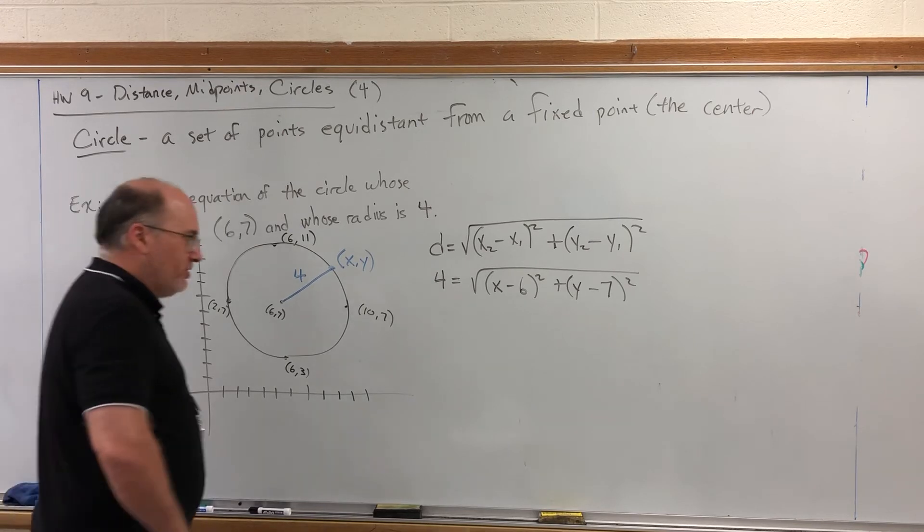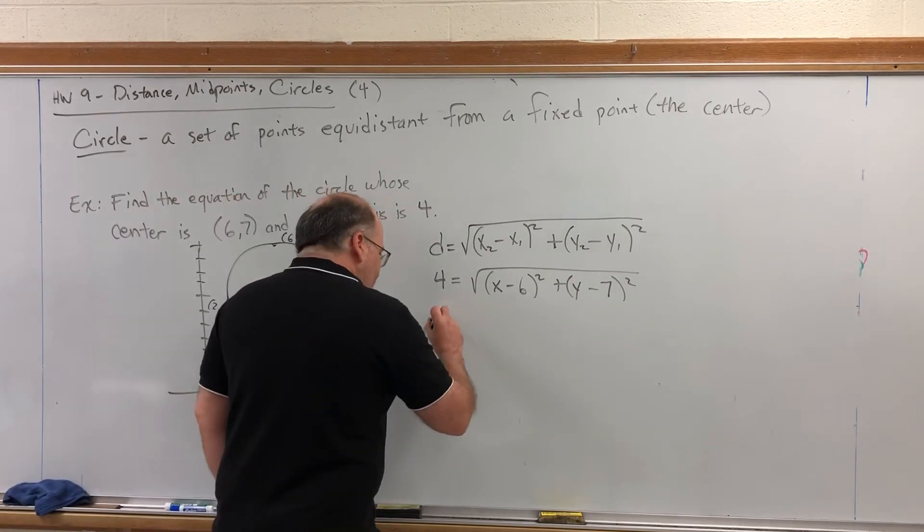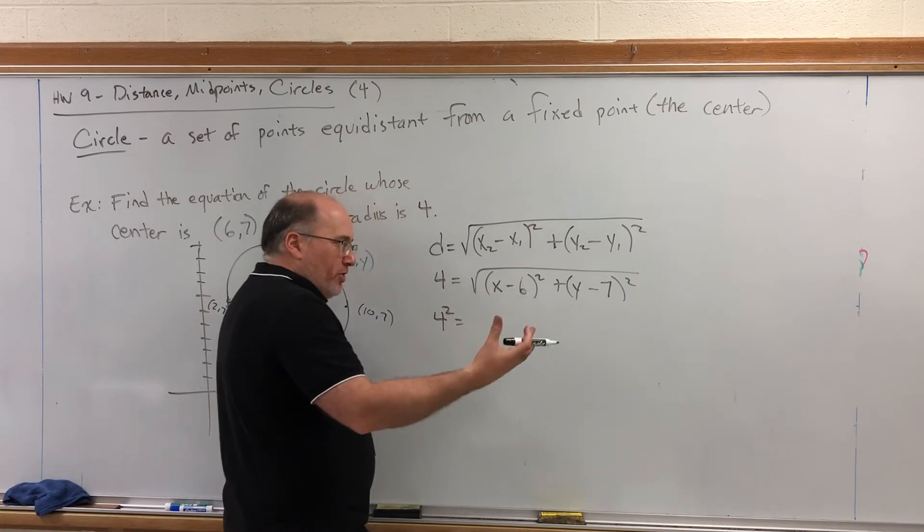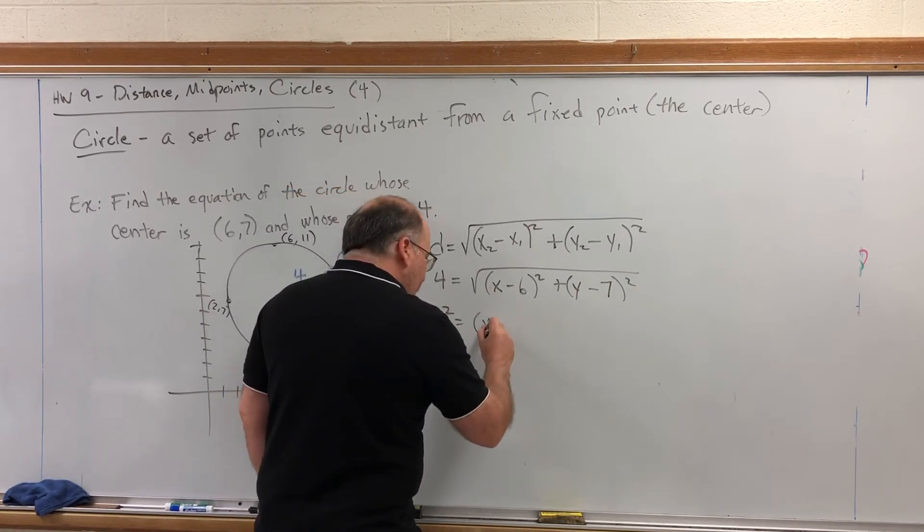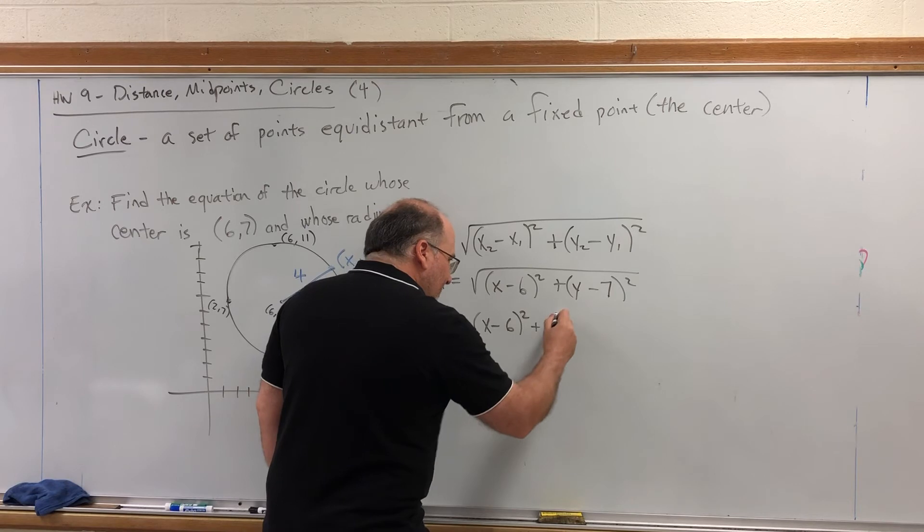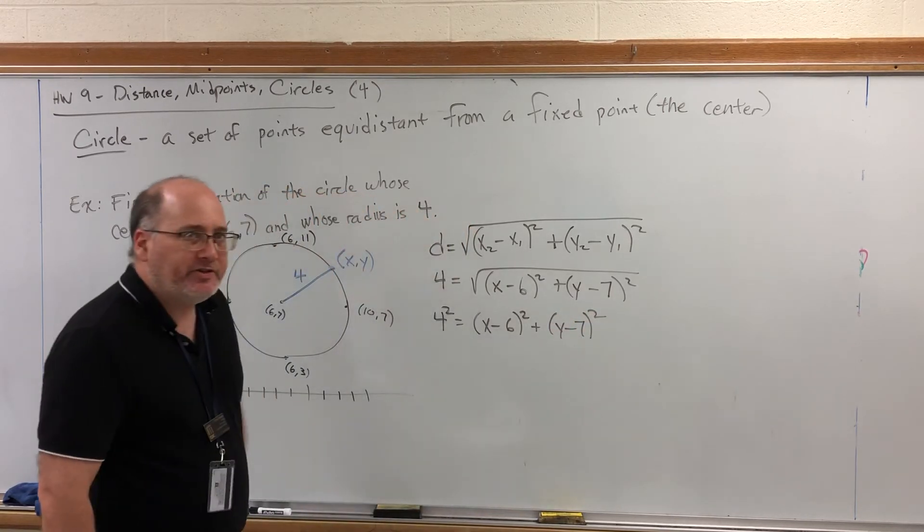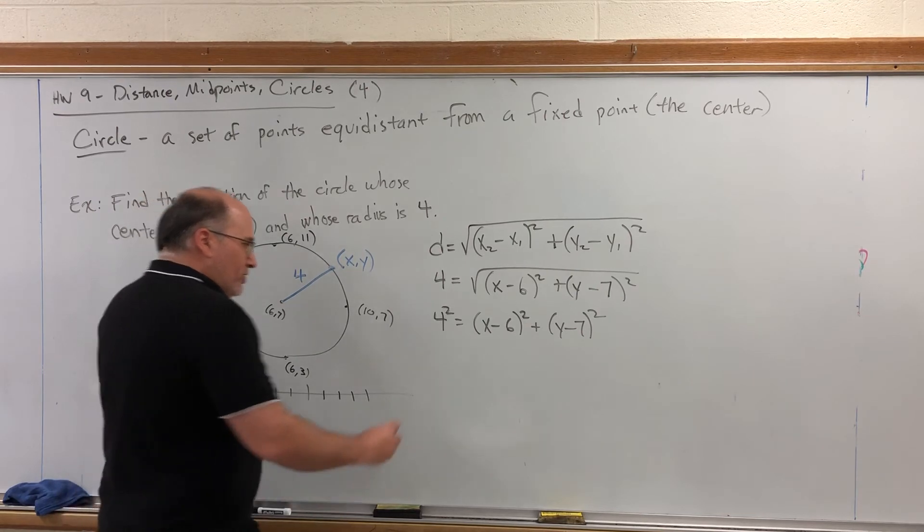let's square both sides. If you square both sides, you get four squared on the left, which will become 16. And if you square the right side, it cancels the square root. Now, we get a slightly better looking equation. It's much better. It doesn't have the square root. And, of course, four squared is 16.